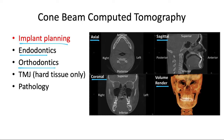Orthodontics uses CBCTs to look at tooth impaction — the exact location and orientation of an impacted tooth and its relation to other tooth roots. For TMJ, you can look at the condylar head, the fossa, and the articular eminence. However, if you're looking at soft tissue, you need an MRI — hard tissue is really the only thing you're examining with a CBCT zoomed in on the TMJ. And for pathology, you can get a really good look at lesions that might be obscured by a regular two-dimensional radiographic image.